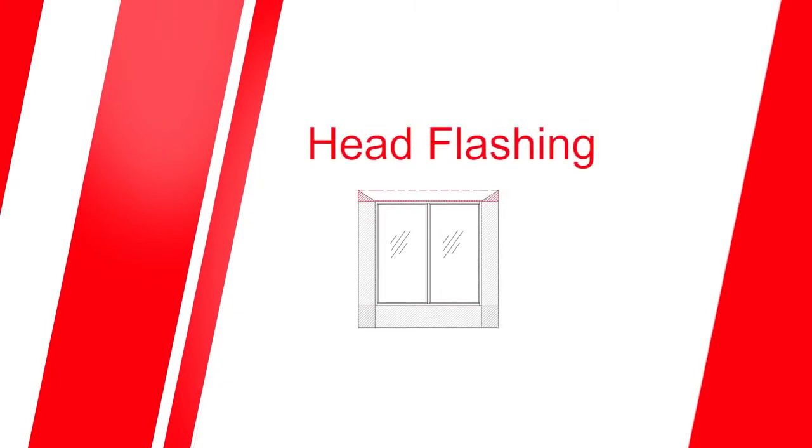Where the top of the window is not protected by the eaves, it will be necessary to fit a head flashing. The head flashing should be fixed to the wall frame or into the internal brickwork above the window and extend outward to cover the head of the window and overlap the jam flashing on each side.